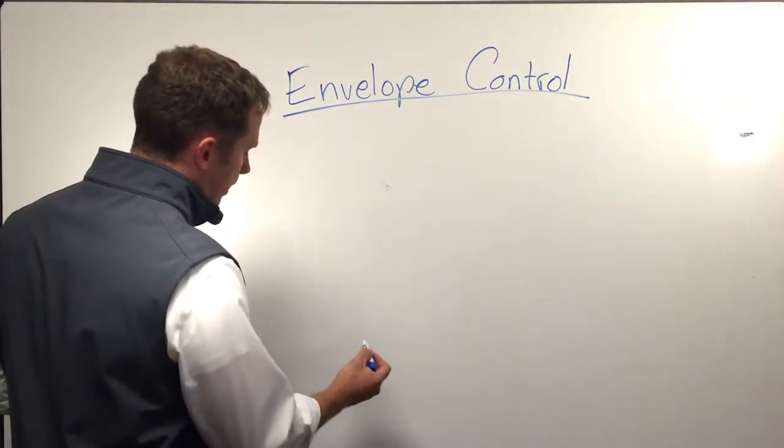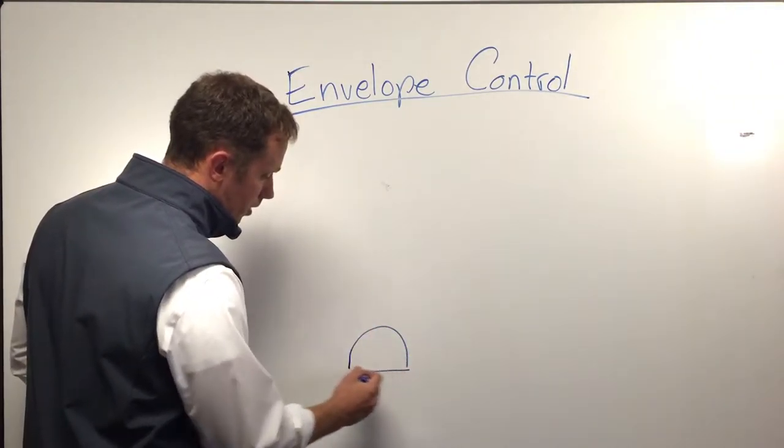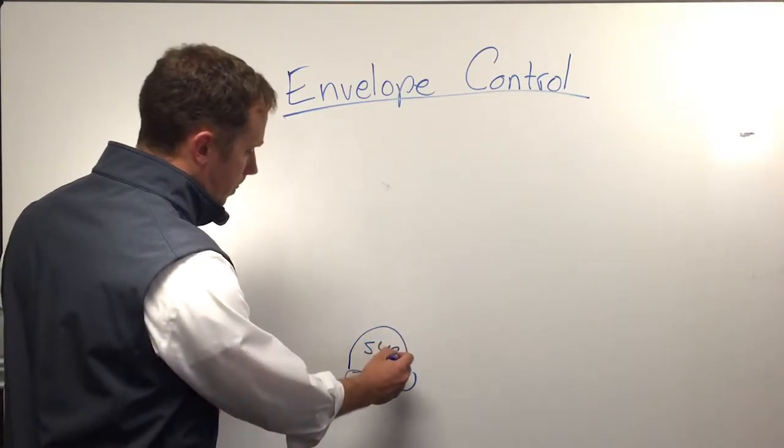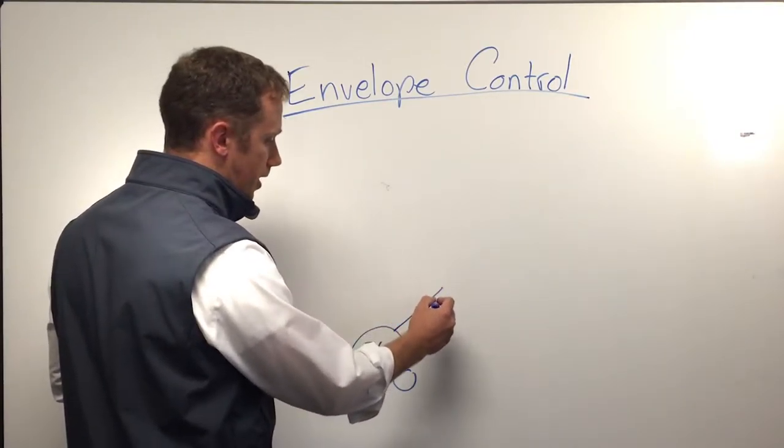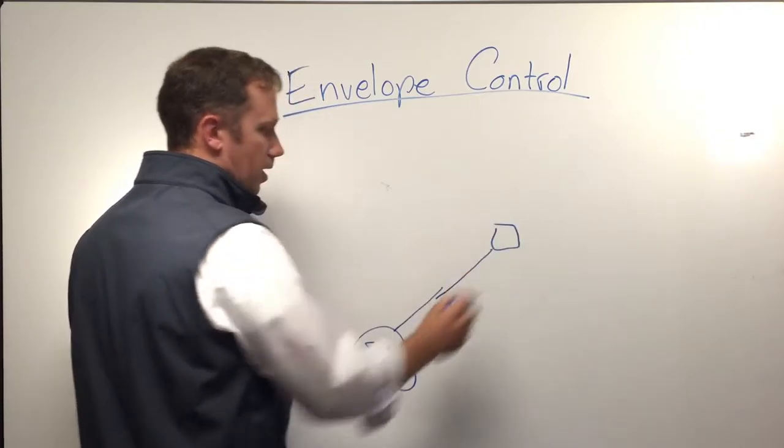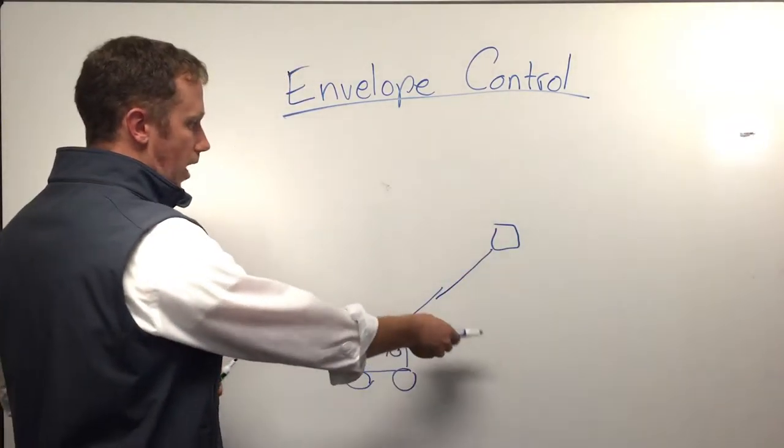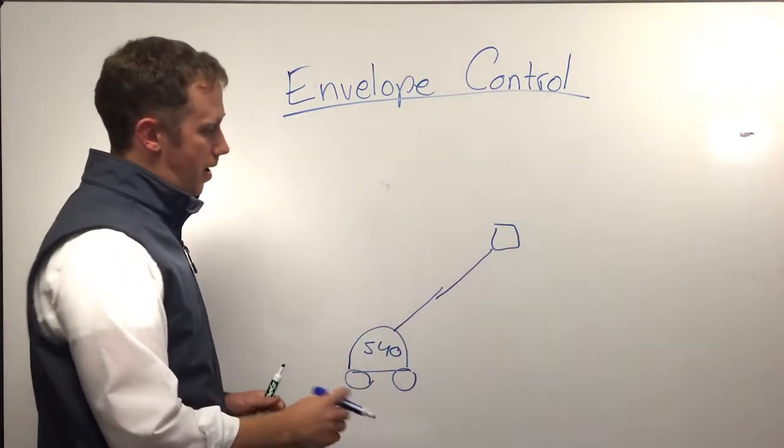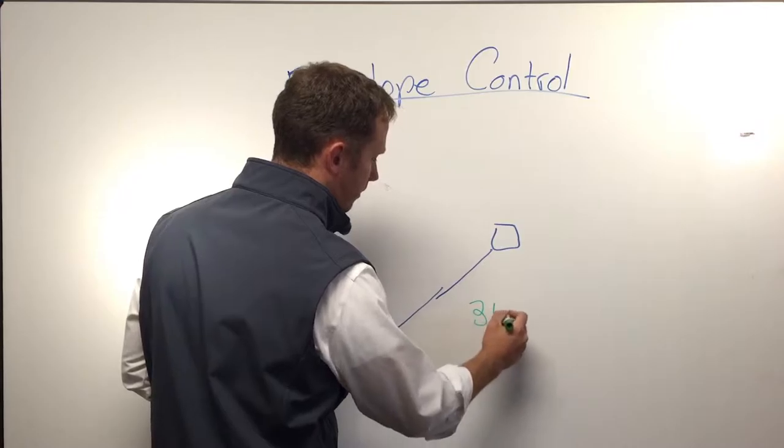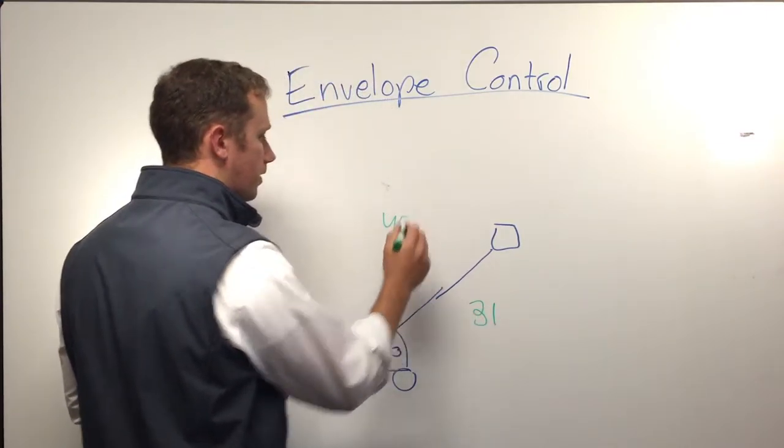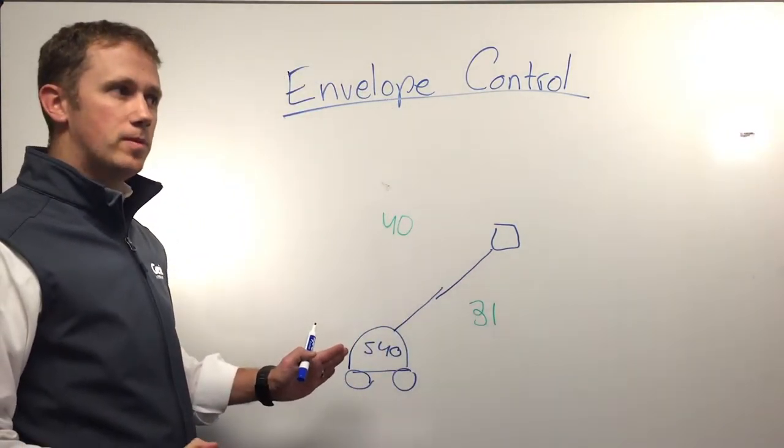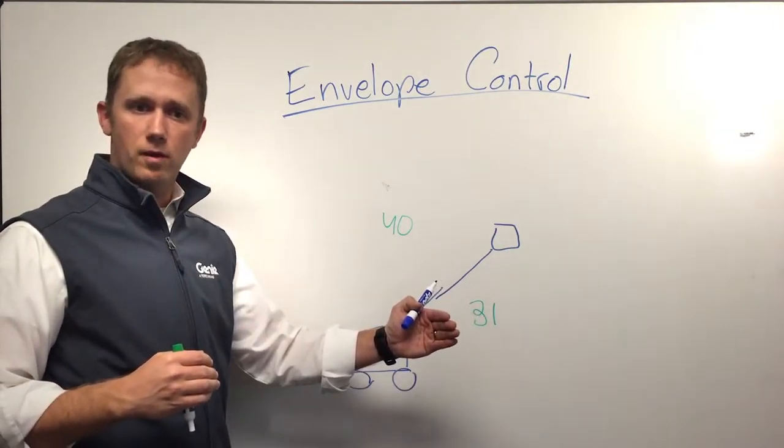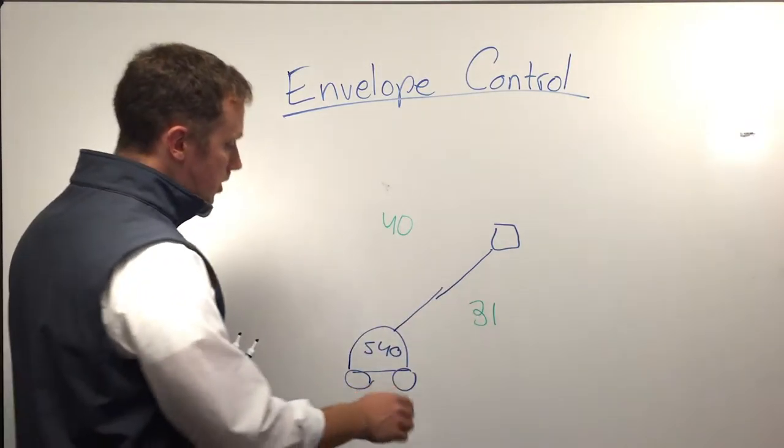Now if we go back to a simple stick boom, say an S40, this machine only has its two-stage mast and the limits of its outreach and height are limited by the geometry and the length of that mast. So this machine delivers us 31 feet of outreach and 40 feet of lift height. It's a fairly simple machine to control and to use because you simply extend the mast out all the way.